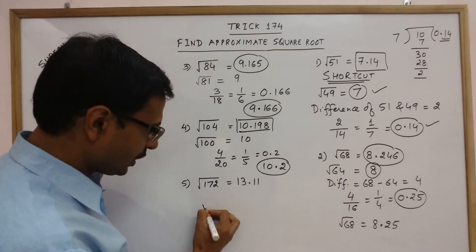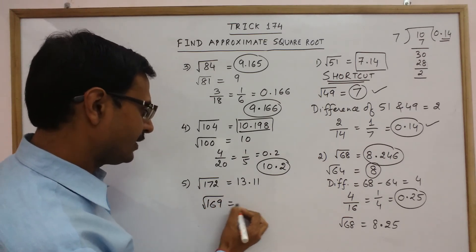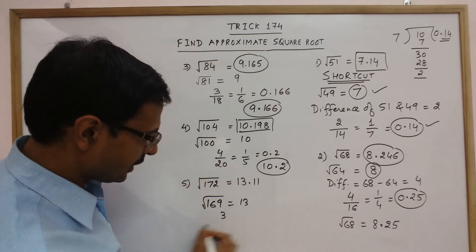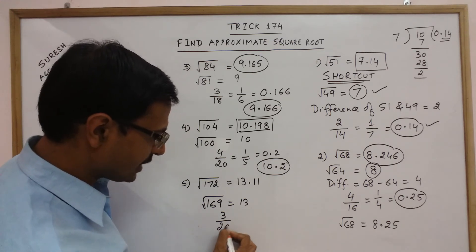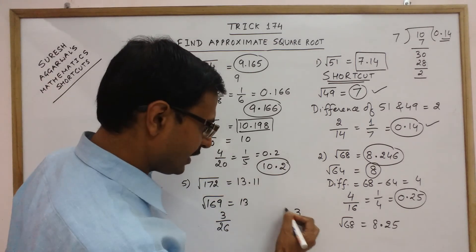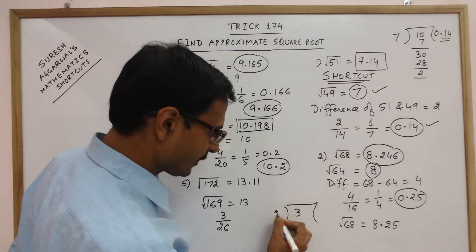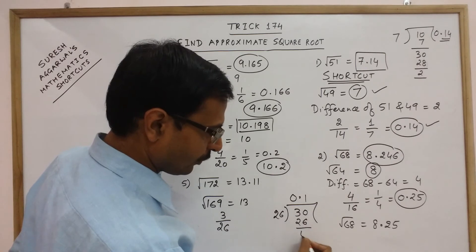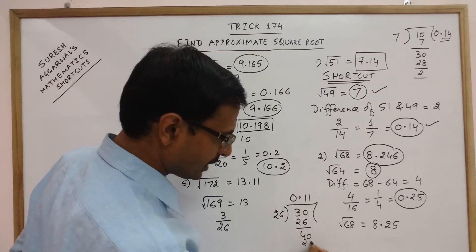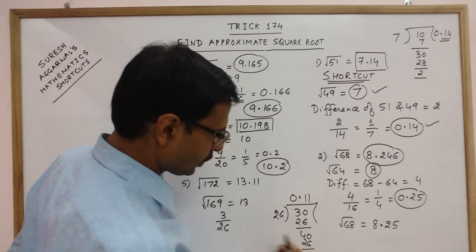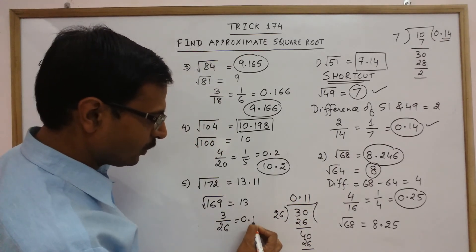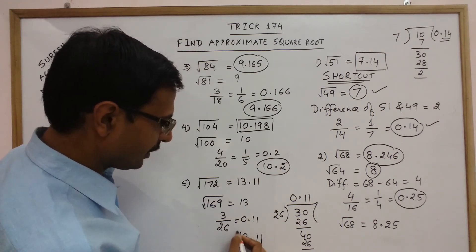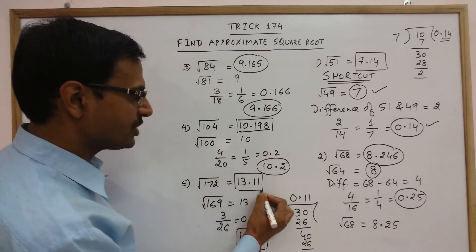Under root 172. Under root 169 is 13. So you get the first part. What is the difference? Difference is 3. And the double of 13 that is 26. So just divide 3 by 26. You get 0.140. So 0.11 is approximate value. So you get 13 and 0.11, 13.11 which is what we have obtained through the traditional method.